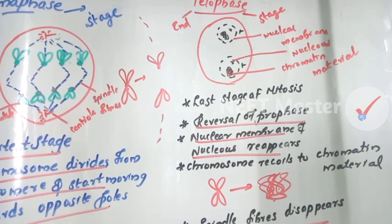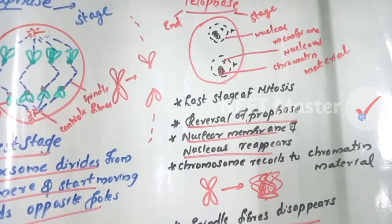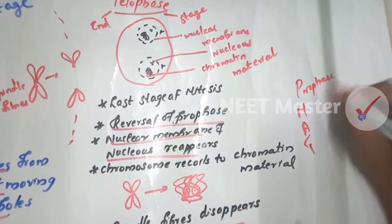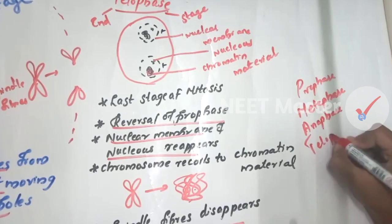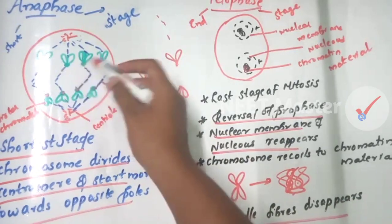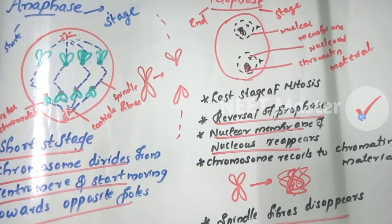To summarize, karyokinesis follows PMAT: prophase is initiation; metaphase means chromosomes align at the equatorial plane; anaphase is when the two opposite poles split as chromatids separate; telophase is the final stage where chromosomes decondense at opposite poles, the nuclear membrane reappears, and the endoplasmic reticulum reforms. These are the stages of karyokinesis.